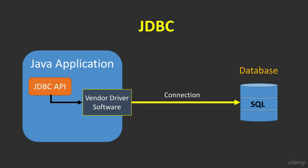The JDBC libraries are part of the Java language, and we can use that Java code to talk to a database. But we need a middleman, and that middleman is known as vendor driver software. There are many database vendors such as Microsoft, Oracle, and IBM. Each of these vendors provide driver software so that Java developers can communicate with that specific database. You can't do that directly — you need to go through this database driver. You can download this database driver from the Microsoft, Oracle, or IBM websites. All we have to do is add that driver to the class path of our Java application, and we can connect with that vendor-specific database.